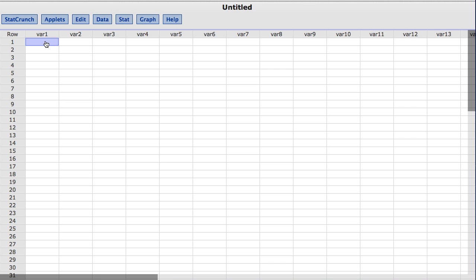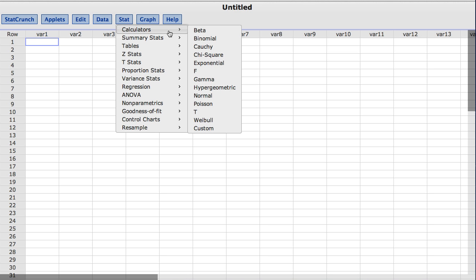To find the StatCrunch calculators, under the Stat menu, choose Calculators. Here is the list of the continuous distribution calculators built into StatCrunch. For this example, I am going to choose Normal.